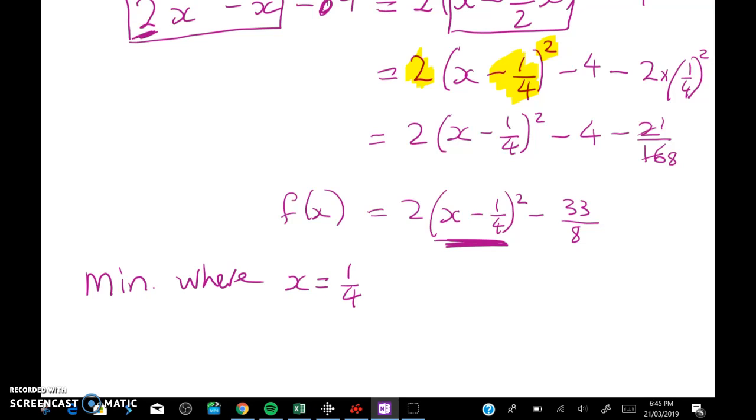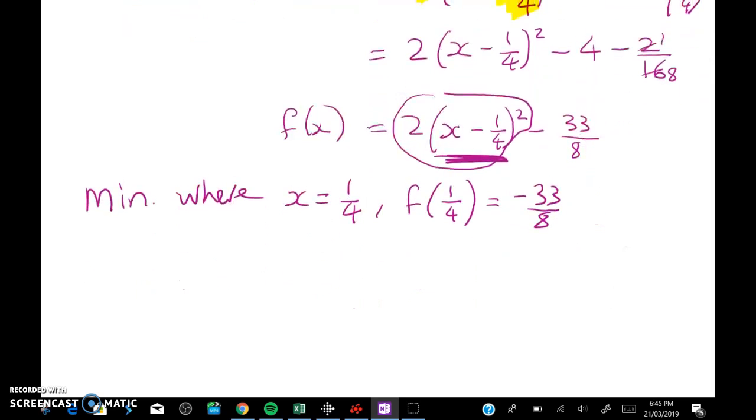So when x is equal to one quarter, this whole thing is zero. And my function is going to have value negative 33 over eight. So that's the minimum value of the function. So there's quite a few things buried in this question. And this is a harder example of completing the square. So if you're really not following this, go have a look at my completing the square video. And I think that's on the level two algebra playlist.